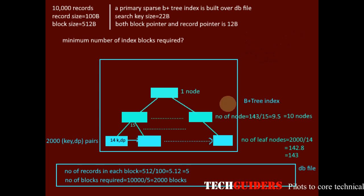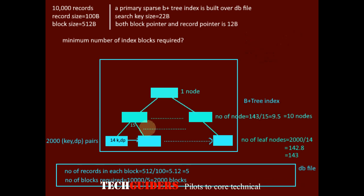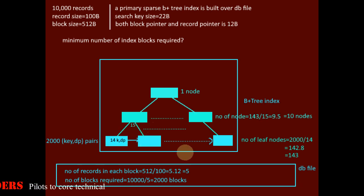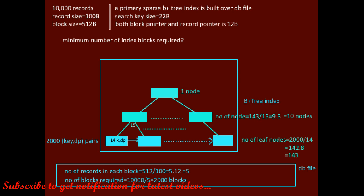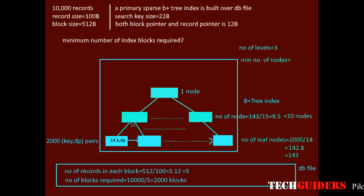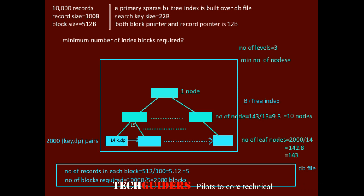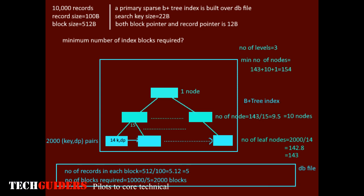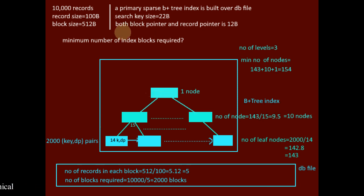So if every node is filled to its maximum capacity, the minimum number of levels required is 3. The minimum number of nodes required is 143 leaf nodes plus 10 internal nodes plus 1 root node, which equals 154 nodes. Therefore, 154 index blocks are required at minimum.